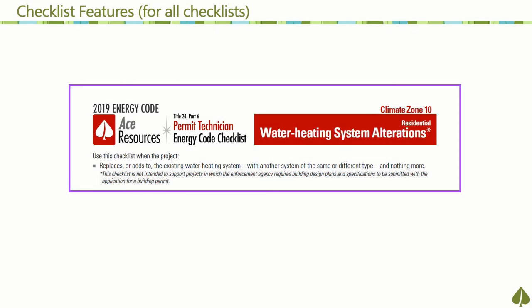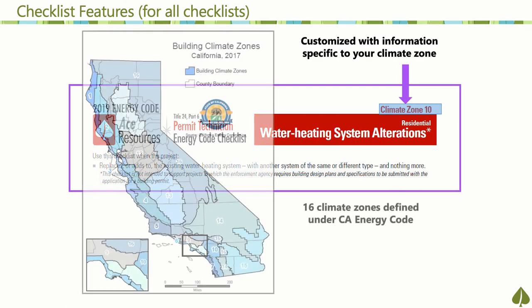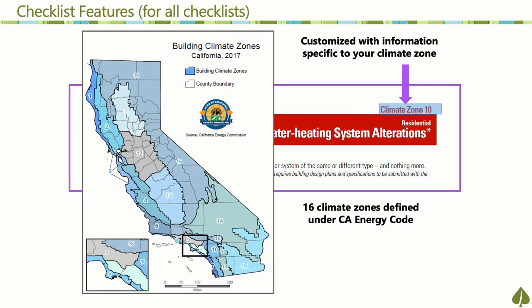Each checklist will show energy code requirements specific to your climate zone. So if you review project submissions for climate zone 10, ensure that your set of permit technician checklists all indicate climate zone 10. If the scope of your job covers more than one climate zone, keep a set of checklists for each climate zone on hand.